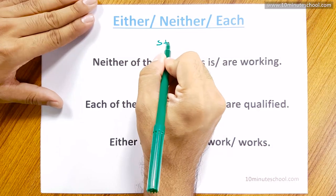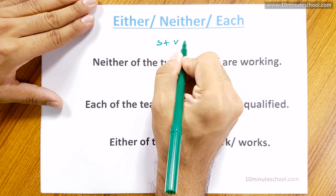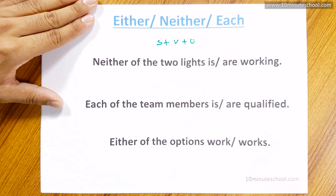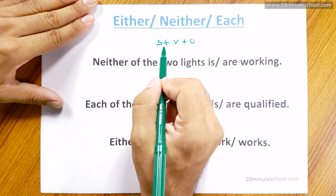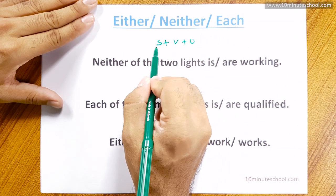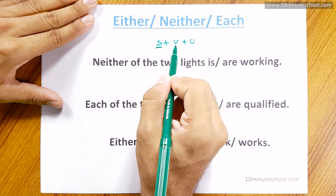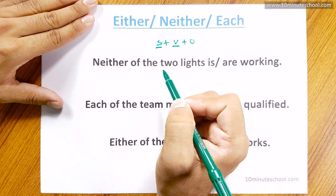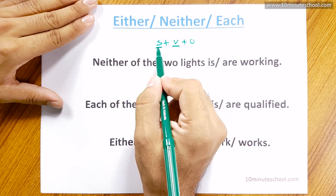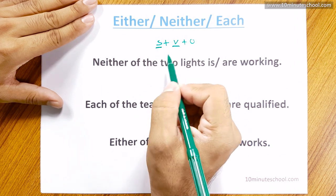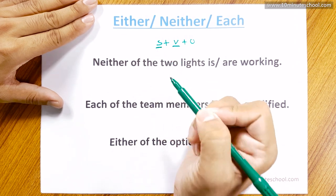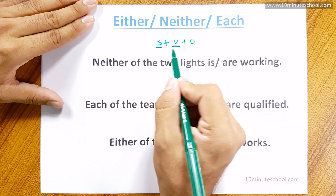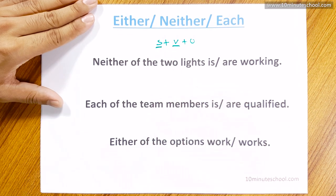The next sentence is subject, verb, and object. Always, the subject and the verb agree. That means, if the subject is singular, the verb is singular. If the subject is plural, the verb is plural.